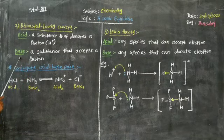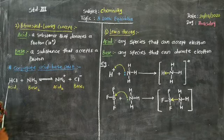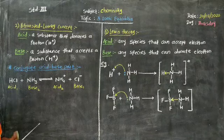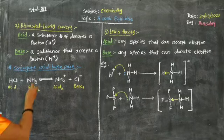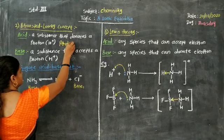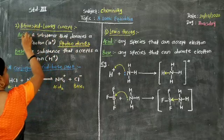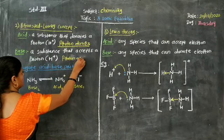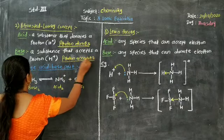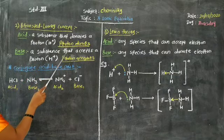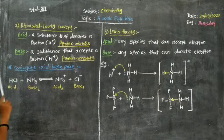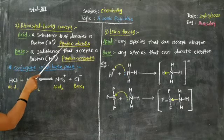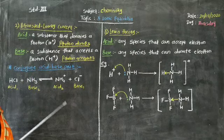According to the Bronsted-Lowry concept, a base is a substance that accepts a proton — again, proton means H+ ions. In short, proton donors are Bronsted acids, while proton acceptors are Bronsted bases. As the whole theory is based on only protons, this theory is also known as the Bronsted-Lowry proton transfer theory or Bronsted-Lowry proton transfer concept.